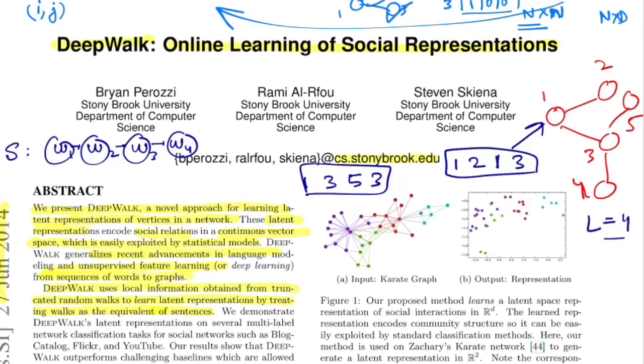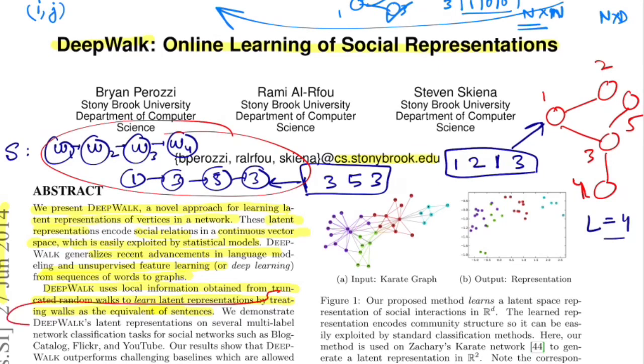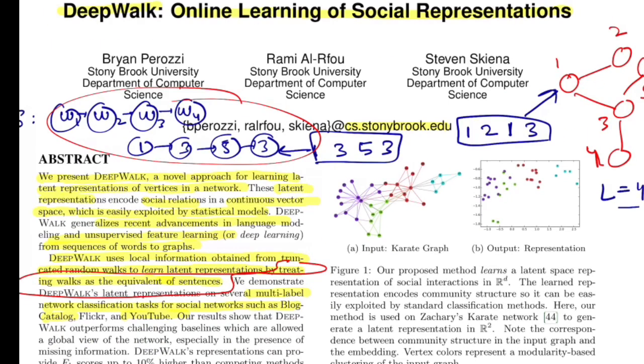Similar is the case with the walks that they have generated. So considering this sample, this becomes 1, 3, 5, 3. This is essentially the same thing what they meant by treating walks equivalent to sentences. Then they talk about demonstrating that latent representations on several multi-label network classification tasks on social networks such as BlogCatalog, Flickr and YouTube.